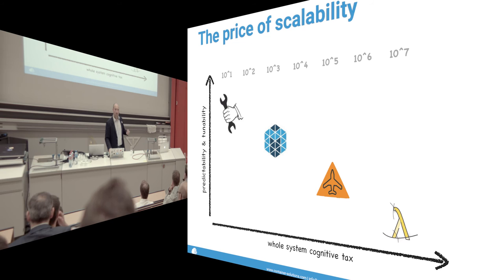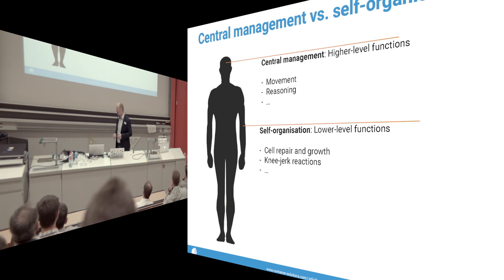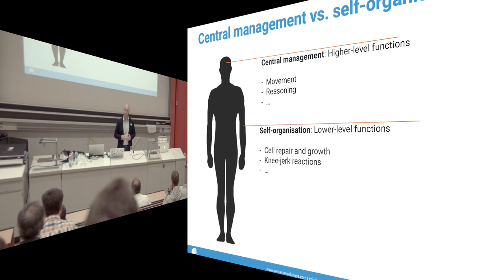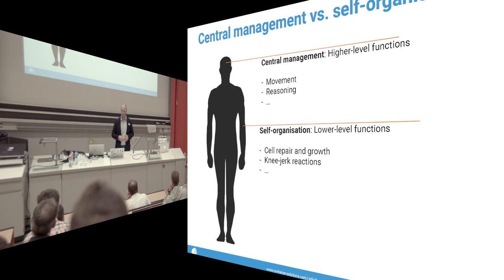Which model should you use for cloud-native stateful applications? My concluding opinion is: all of them, depending on the use case. The nicest analogy is the human body — reasoning and movement are better managed centrally, but cell growth happens autonomously, and knee-jerk reactions don't need central management. Look at your application and decide what works best for different components. Like a bodybuilder — the brain decides to go to the gym, but then the muscle itself decides whether it wants to grow.